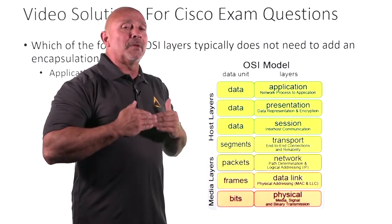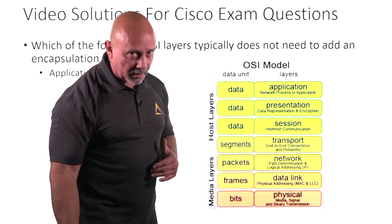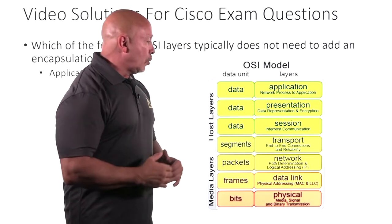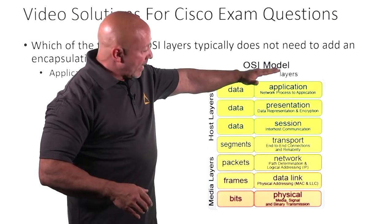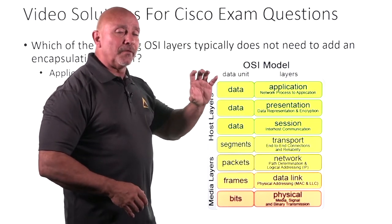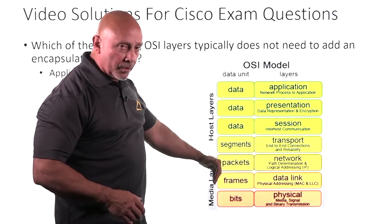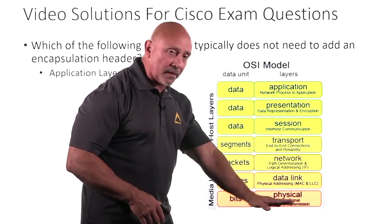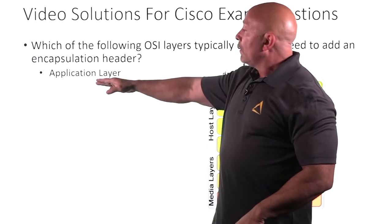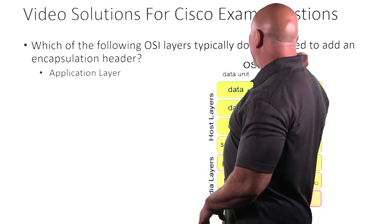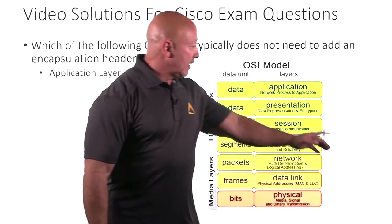The application layer is just pure data. Remember what the application layer does — it's making sure it can access the network. That's why it doesn't need to add a header as it goes down. Encapsulation is going down the OSI model; de-encapsulation is going to the other side and putting everything back together. The application layer does not need to add an encapsulation header.